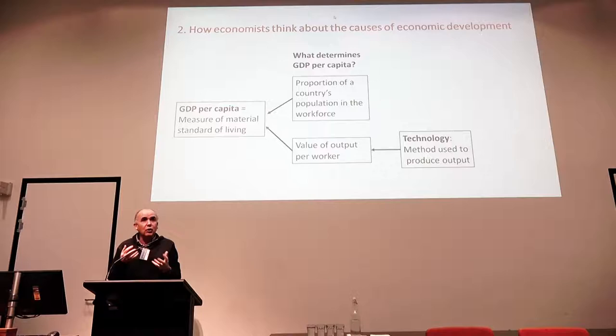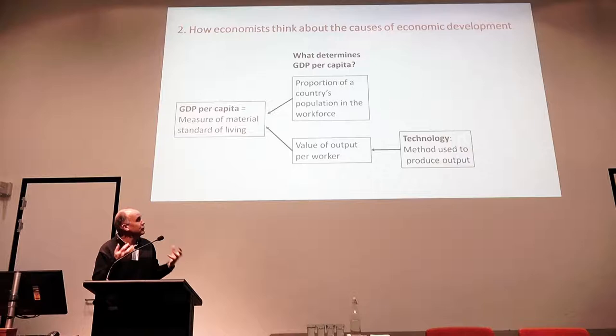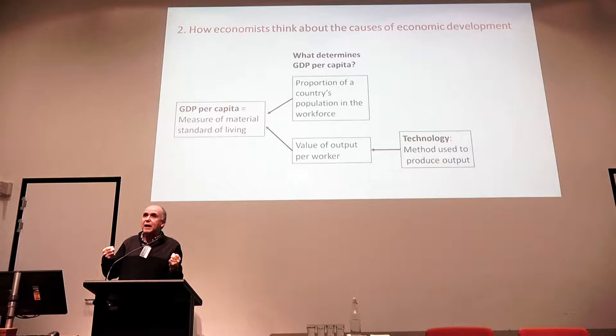And the thing that economists think of as determining output per worker is technology — the method you use to produce output. If you think about why living standards increased so much in the Industrial Revolution, it was because of new technologies: the invention of steam power, new ways to produce cotton and other textiles, better ways to produce iron and steel. Together, steam and iron and steel became the basis for railway transport and so on. So new technologies and new ideas for producing are basically, to economists, the basis of improvements in material standards of living.